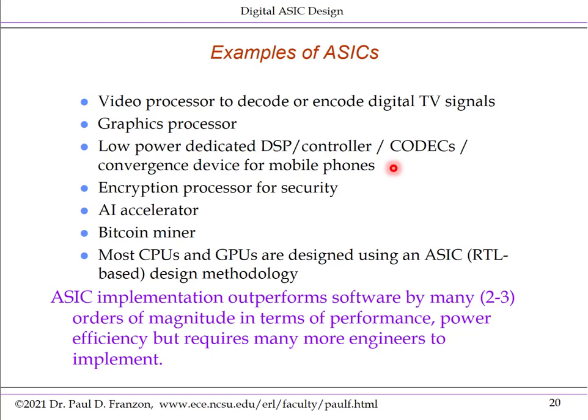For example, the 5G codec in your cell phone is built as an ASIC. Encryption processors for security may be part of a larger chip but are built as ASICs. An increasingly common ASIC is an artificial intelligence accelerator, designed to speed up and reduce the power consumption of an inference engine. Bitcoin miners, which use hash function solvers, are also built as ASICs.